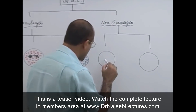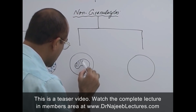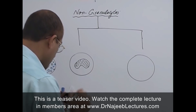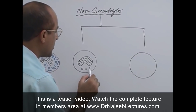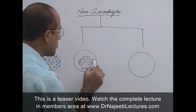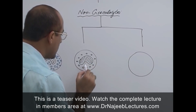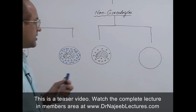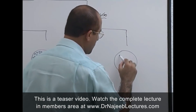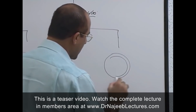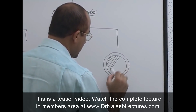Now for non-granulocytes or agranulocytes: monocytes have granules, but these granules are non-specific granules, like lysosomes. You must know how to identify monocytes — their granules are not specific like those of granulocytes.